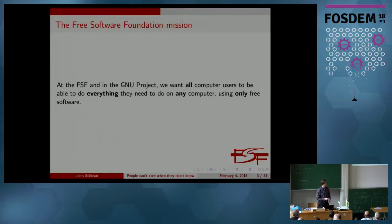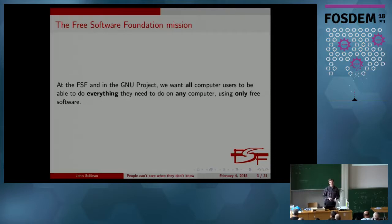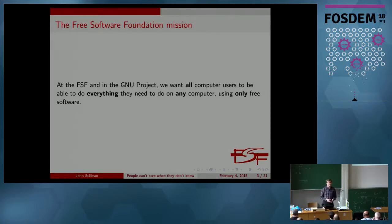At the FSF, we want all software to be free software. Basically, proprietary software shouldn't exist because it infringes everyone's freedom and leads to horrible consequences along the way. And in order to achieve that, we need to have a really huge movement. One way to get to that movement is to make sure that everybody — not just technical people, not just developers — understands what free software is and why it's important. We talk about that goal by saying we want to make free software a kitchen table issue, something that families talk about around the dinner table along with other political issues like TPP or anything else.